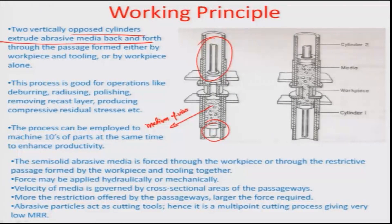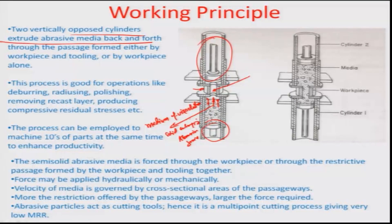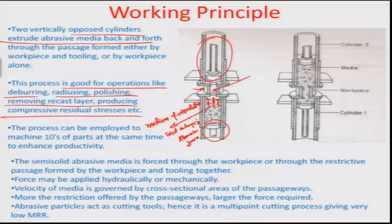The viscoelastic solid medium entraps abrasive grains and there is a motion of all these abrasive grains enabling finishing on the internal contour of the element kept as a sandwich between both vertically opposed cylinders. This process is good for operations like deburring, radiusing, polishing, removing recast layers, and producing compressive residual stresses. The process can machine tens of parts simultaneously by having a proper cylinder-actuated mechanism sandwiching all parts together — making it a highly productive, high-yield process.